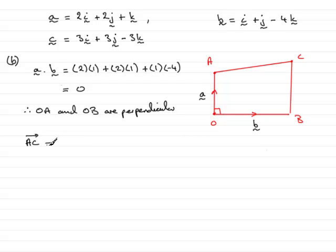Now, A to C, if I want to go from there to there, A to C is the same as going from A to O and then following that with O to C. So A to C is A to O followed by O to C. And A to O is the same as going in the negative sense of O to A. So that's minus O to A plus O to C. We can change this round as O to C minus O to A.